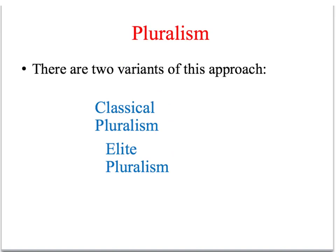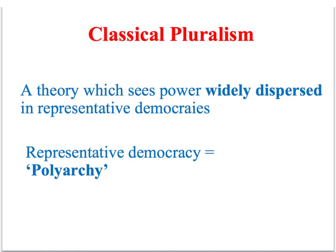Unlike Marxist perspectives, which argue that political power is concentrated in the hands of the ruling class, pluralism argues that power in a representative democracy is widely dispersed. This means that power is shared by lots of different groups and individuals who are often in competition with one another. The technical term for this is polyarchy — a political system where lots of different groups can influence the political process.